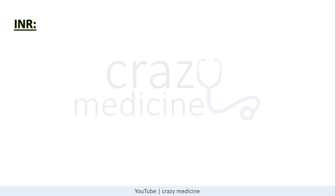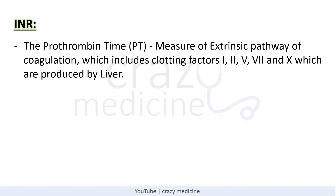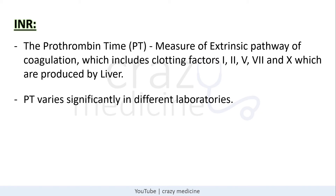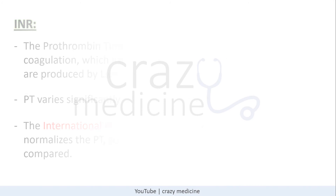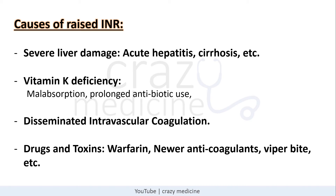Next is INR. Prothrombin time measures the extrinsic pathway of coagulation, which includes clotting factors 1, 2, 5, 7, and 10 — all produced by the liver. PT varies significantly across different laboratories, so the International Normalized Ratio (INR) normalizes the prothrombin time so values from different labs can be compared. Causes of raised INR include severe liver disease (acute hepatitis, cirrhosis), vitamin K deficiency (due to malabsorption or prolonged antibiotic use), disseminated intravascular coagulation, and drug- or toxin-induced liver injury.